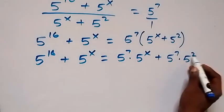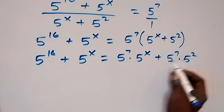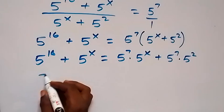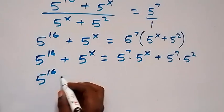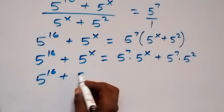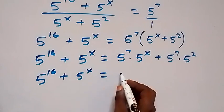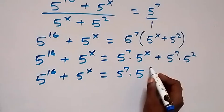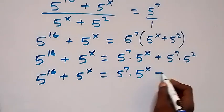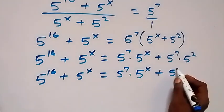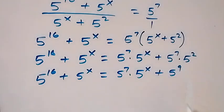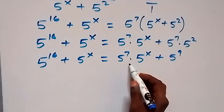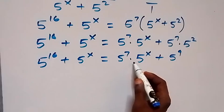Adding the exponents together — since they have the same base — we have 5 raised to power 16 plus 5 raised to power x equals 5 raised to power 7 times 5 raised to power x, plus 5 raised to power 9.